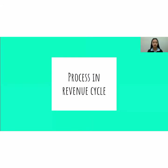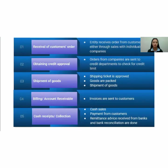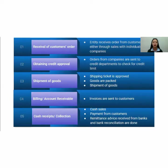I will talk about the process in Revenue Cycle. There are five processes in Revenue Cycle. First, the entity will receive the order from the customer either through sales with individuals or companies. There are two types of sales: sales in cash and sales in credit. If the customer purchases in credit, the orders will be sent to the credit department to check for credit limits. Once the order has been accepted, the shipping department will start to pack the goods and ship it to the customer. When the customer receives their goods, an invoice will also be sent.